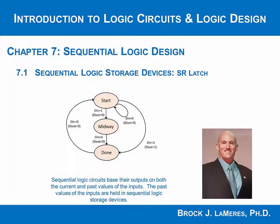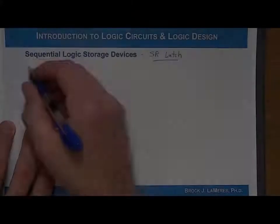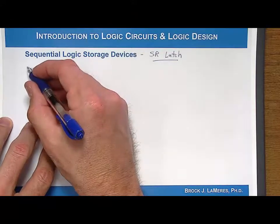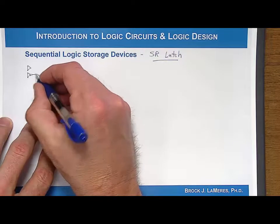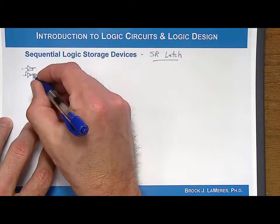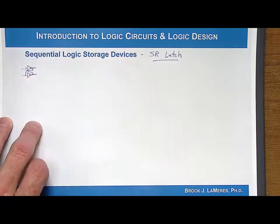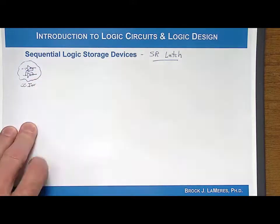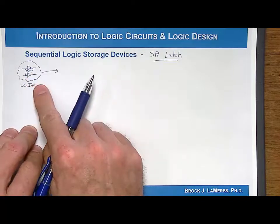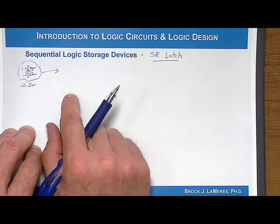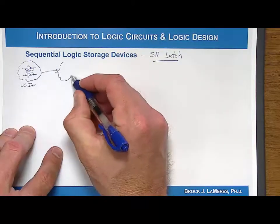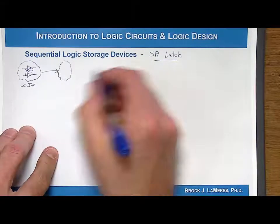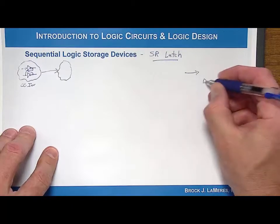We look at a more sophisticated sequential logic storage device known as the SR latch. This begins with the cross-coupled inverter pair, which is the base storage element — two inverters with their outputs fed back to the input of the other one. When we look at sequential logic storage devices, we want to make modifications to that cross-coupled inverter pair, walking through a whole bunch of interim circuits until we get to the ultimate circuit, which is called the D flip-flop.